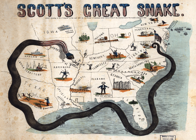Inland operations are included in the Western Theater or Trans-Mississippi Theater, depending on whether they were east or west of the Mississippi River. Coastal operations in Georgia, including the culmination of Sherman's March to the Sea, are included in the Western Theater.